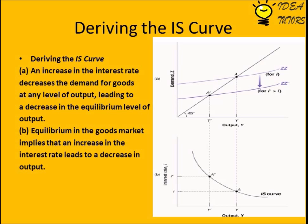The IS curve is derived by joining equilibrium points of the goods market. The upper part of the figure shows that an increase in the interest rate decreases the demand for goods at any level of output, leading to a decrease in the equilibrium level of output. Equilibrium in the goods market implies that an increase in the interest rate leads to a decrease in output — this is why the IS curve is downward sloping.